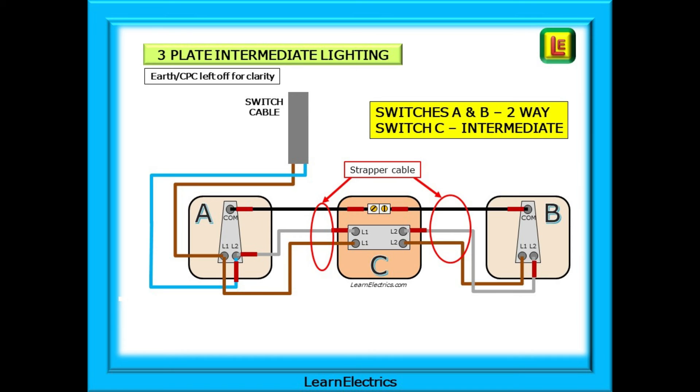And this is the wiring for a three-plate intermediate lighting circuit. Again note that the black and grey strapper conductors are marked with brown sleeving as well as the blue switch wire. They can all be phase conductors at some time.